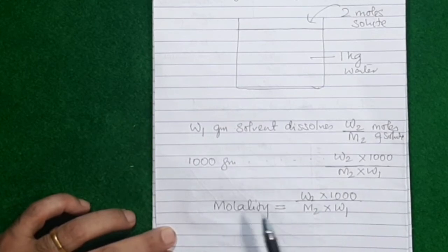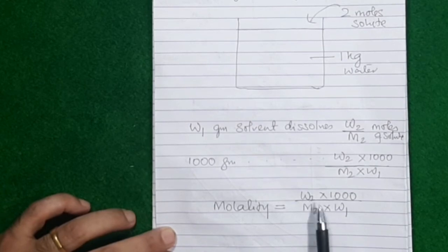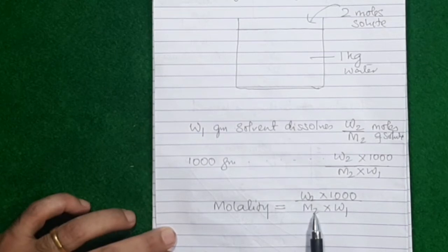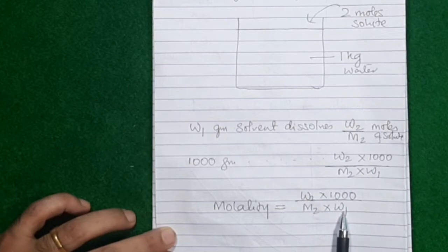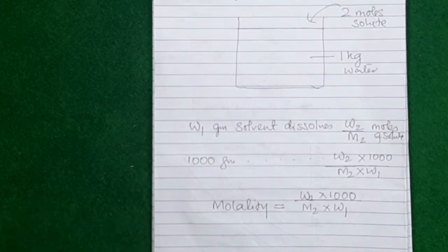Why is molality expressed this way? Molality is number of moles of solute — calculated by dividing mass of solute by molecular mass — and when divided by mass of solvent and multiplied by 1000, you get the number of moles in 1000 grams of solvent. Now, why do we need molality when there's already molarity?